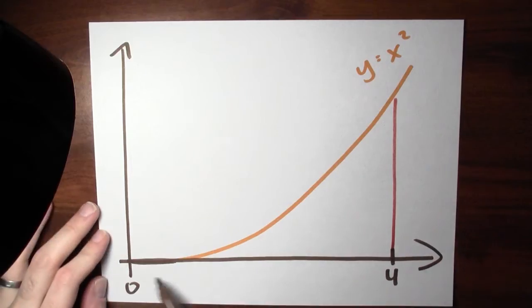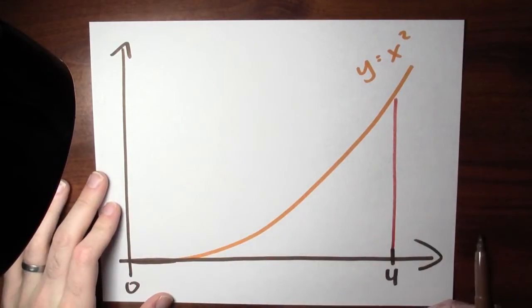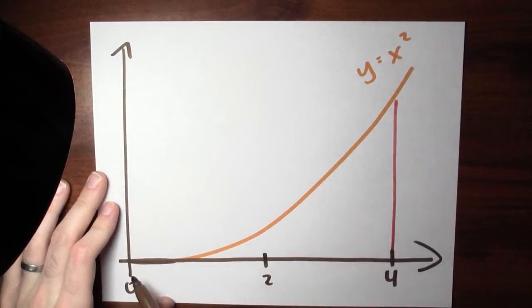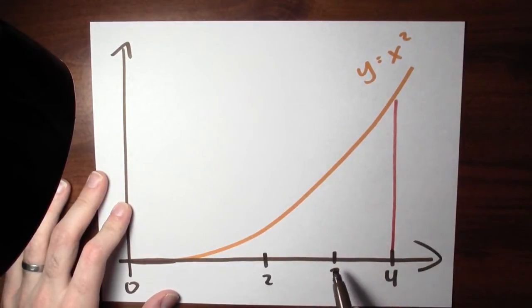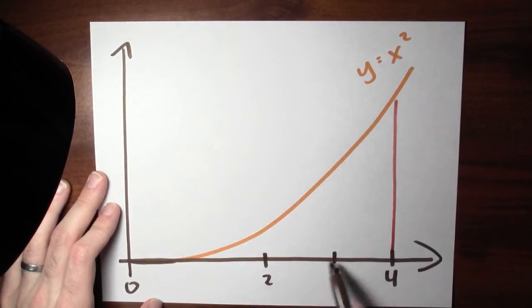The first step is to take that interval 0 to 4 and cut it up into some smaller pieces. I can cut the interval 0 to 4 up however I'd like. I'll cut it into three pieces: a piece from 0 to 2, a piece from 2 to 3, and a piece from 3 to 4. So I partition the interval from 0 to 4 into three pieces — this piece here, this piece here, and this last piece here.